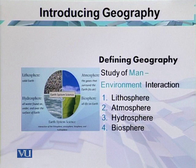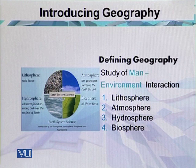Number four is the biosphere, which is the life layer of the planet. It includes the most important life — human life — because of the suitability of the air and suitability of the environment. That is why this life is present over the surface of the earth.